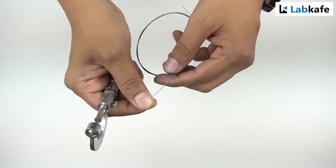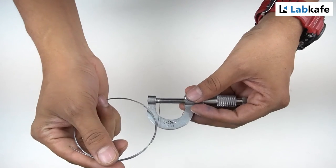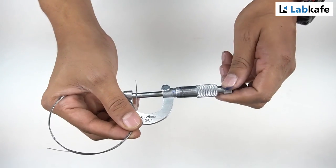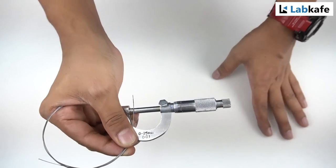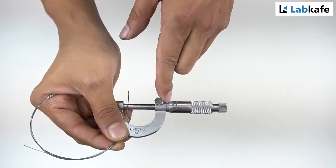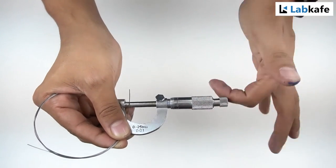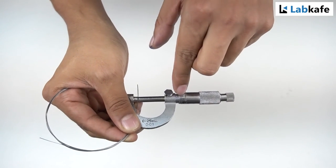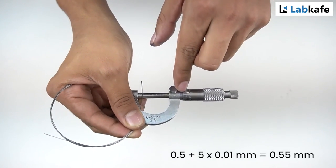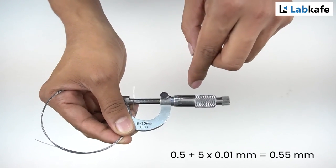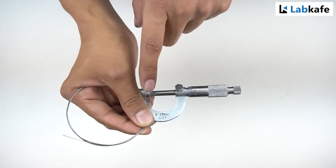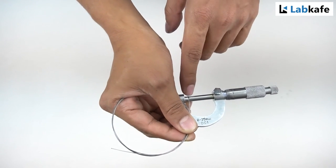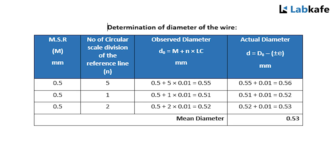Let's measure the diameter of the wire. As you can see on the main scale, it is 0.5. On the circular scale, it is 5. So 0.5 plus 5 into 0.01 is 0.55. That is the diameter of this wire. So we have to do the same for three different places and get the average of the diameters.